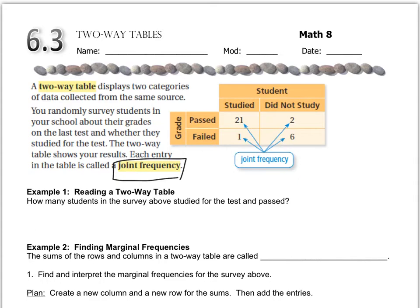So the question we have is, in the table, how many students in the survey studied and passed? So we're looking for the intersection of studied and passed, that's right here at 21. So the answer is 21 students.